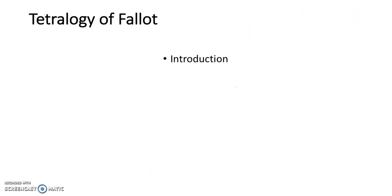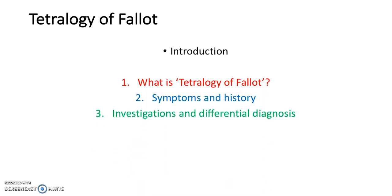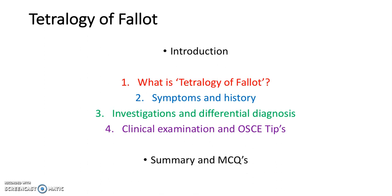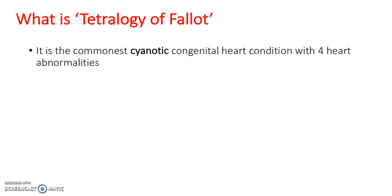Okay, so let's begin. We're going to start with what tetralogy of Fallot is, symptoms and history, investigations and differential diagnosis, clinical examination and OSCE tips, and then finally we're going to summarise and go back over the MCQs. So, what is tetralogy of Fallot? It's the most common cyanotic congenital heart condition with four heart abnormalities.